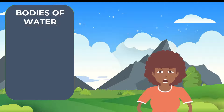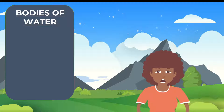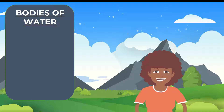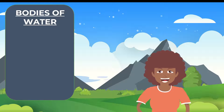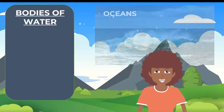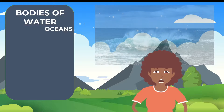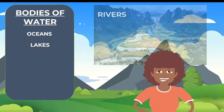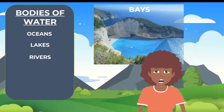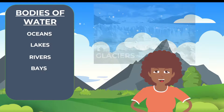Bodies of water are places where we can find great amounts of water. Examples of bodies of water are: oceans, lakes, rivers, bays, and glaciers.